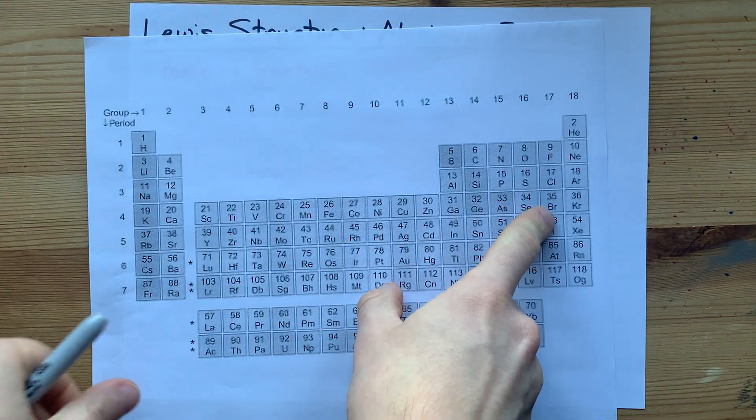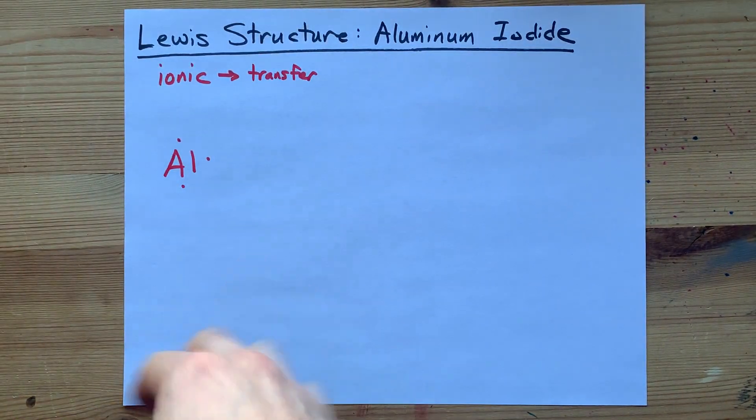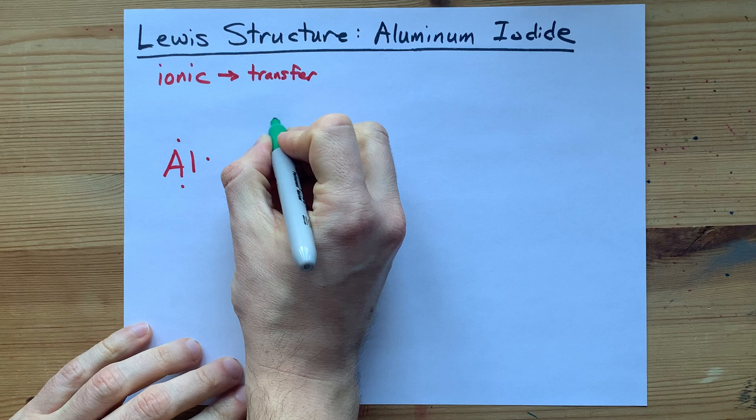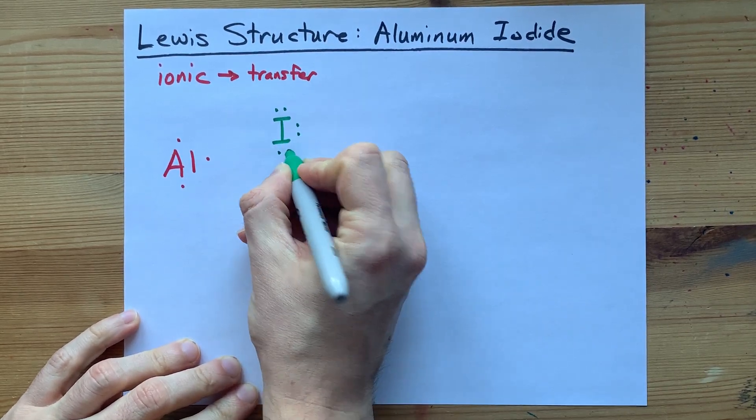Iodine is here in group 17. That means each iodine atom brings seven valence electrons. There's my I. One, two, three, four, five, six, seven.